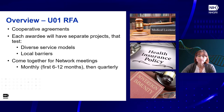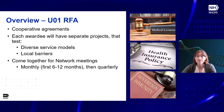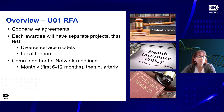The award mechanism is a cooperative agreement. Each awardee will have separate projects that test diverse service models and local barriers — we're not expecting all awardees to create one unified model. Each can propose their own models to test. This is a cooperative agreement because there will be network meetings monthly for the first six to twelve months and then quarterly, to discuss progress, barriers, and brainstorm solutions. Pharmacogenetic testing and consultation would be included — applicants should ensure they have expertise to answer those questions.